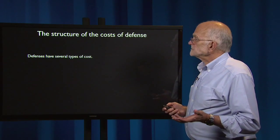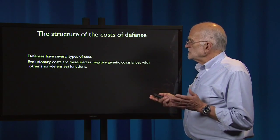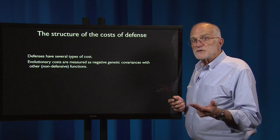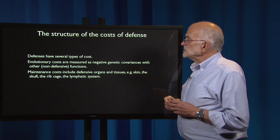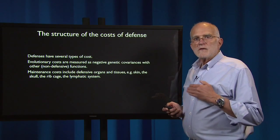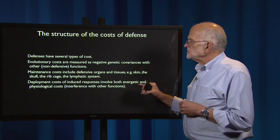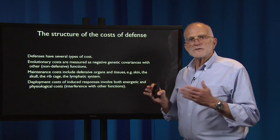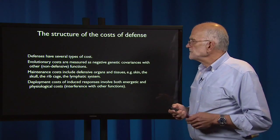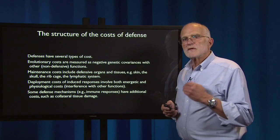Costs of defense have a certain structure. Different defenses have several types of cost. The evolutionary costs are measured as negative genetic covariances with non-defensive functions — the standard negative genetic correlation definition of a trade-off. Maintenance costs include defensive organs and tissues such as skin, the skull, the rib cage, and the lymphatic system — basic capital investments. The deployment costs of induced responses involve both energetic and physiological costs: energetic costs require calories to ramp something up, while physiological costs interfere with other functions. Some defense mechanisms, such as immune responses, have additional costs such as collateral tissue damage, particularly in the case of inflammation.